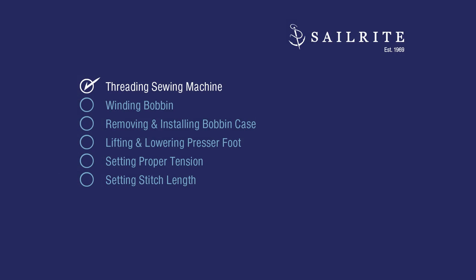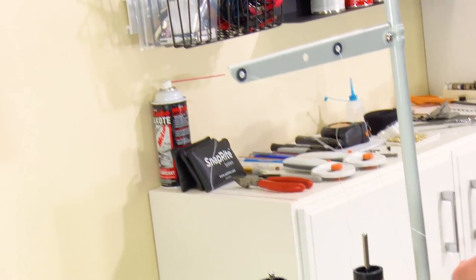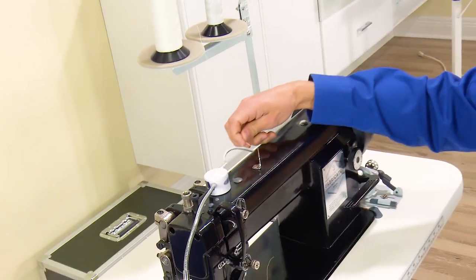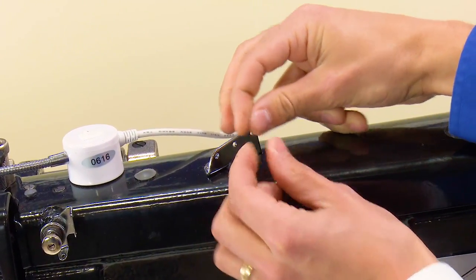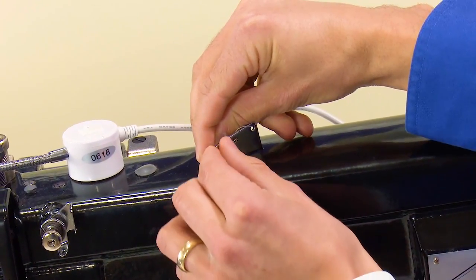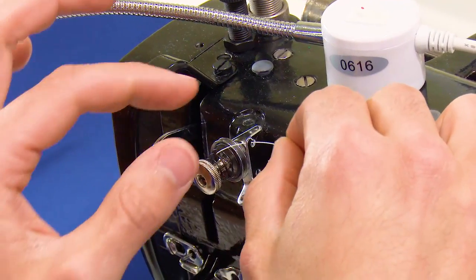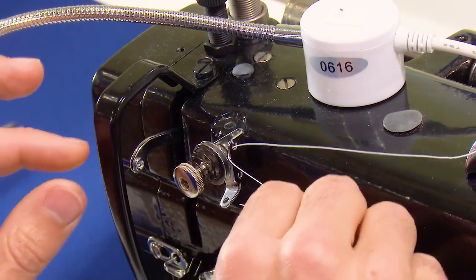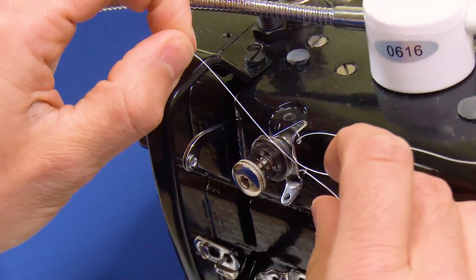The first task is threading. Place your Kona thread on the thread stand and run the thread up to the thread stand arm. Pass the thread towards you through the far right hole of the three hole thread guide, then up over the top and through the left most hole. Now pass the thread through the top hole of the guide, bringing the thread around to the front, then through the bottom hole of the guide.